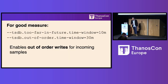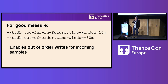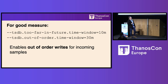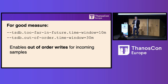For good measure: I didn't really talk about out-of-order writes, but this is a feature I didn't know existed — I think it's actually a hidden flag. It's very useful: it enables out-of-order writes for incoming samples, giving you a window when you can ship samples out of order. This is especially useful as we're using Telegraf, which doesn't really have guarantees on the order of samples ingested.